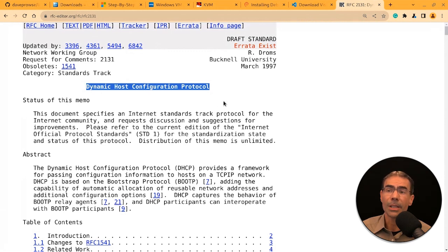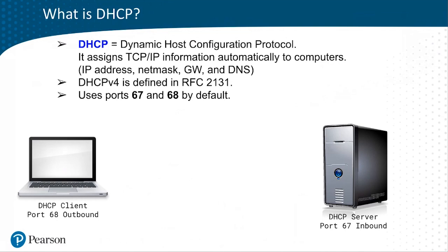DHCP 4 uses ports 67 and 68 by default — this is for IP version 4. Here we have a DHCP server, which is the device that's going to hand out IP addresses to clients on the network. You can see that it has port 67 inbound open — that is the default open port for DHCP servers, so it's listening for inbound connections from DHCP clients.